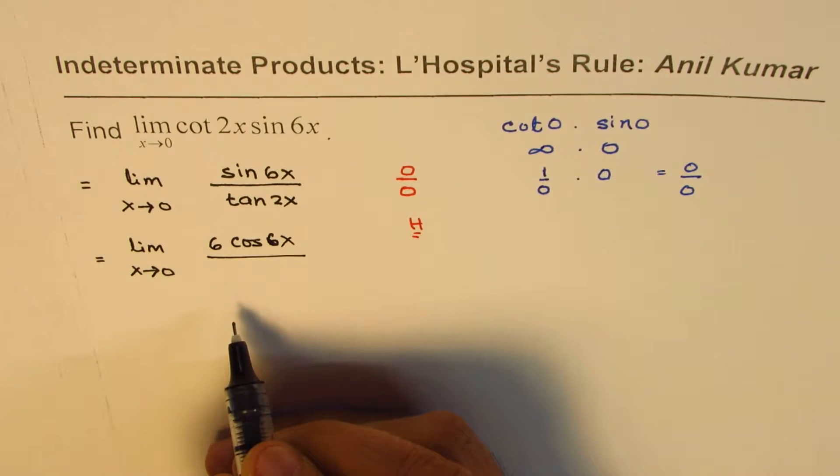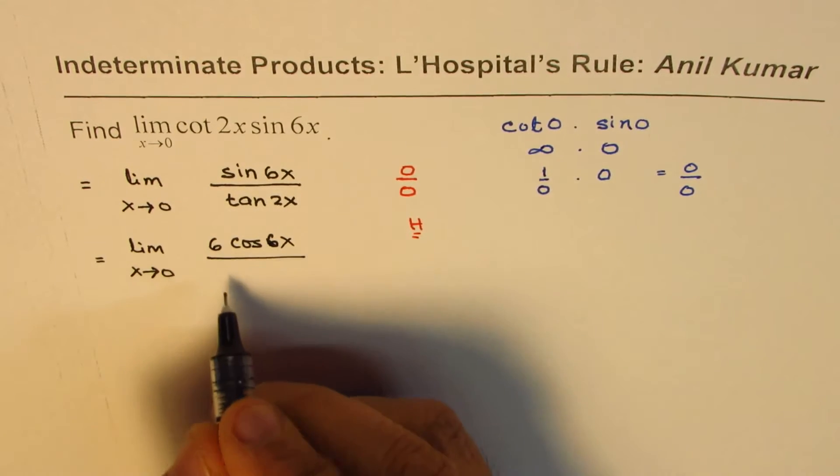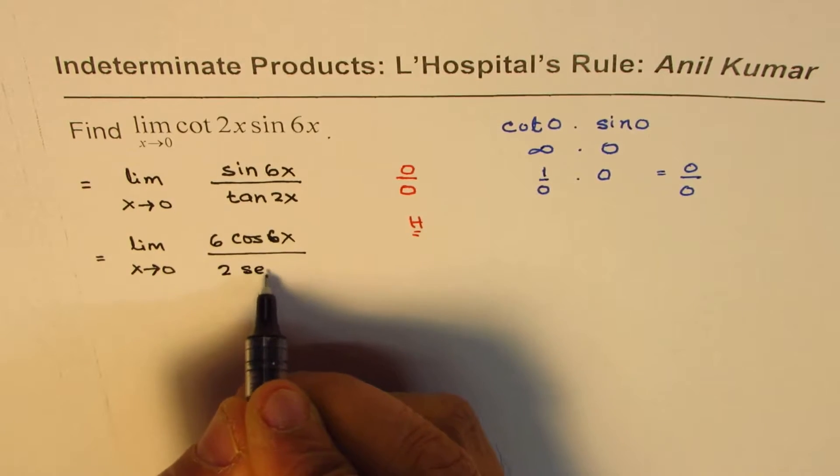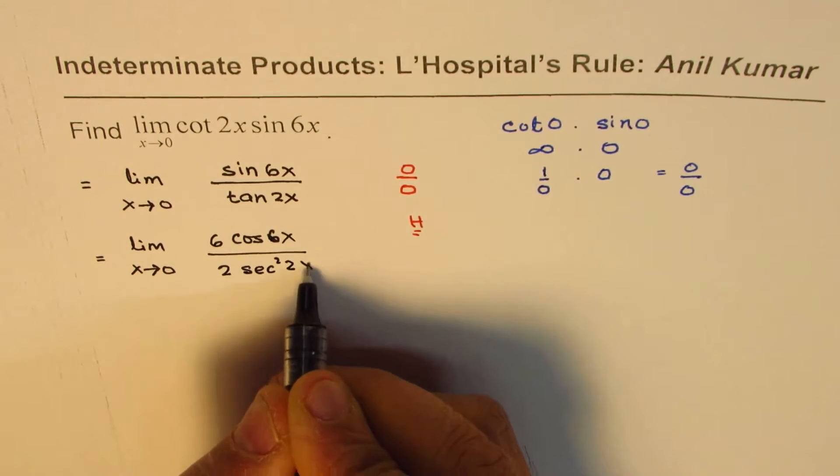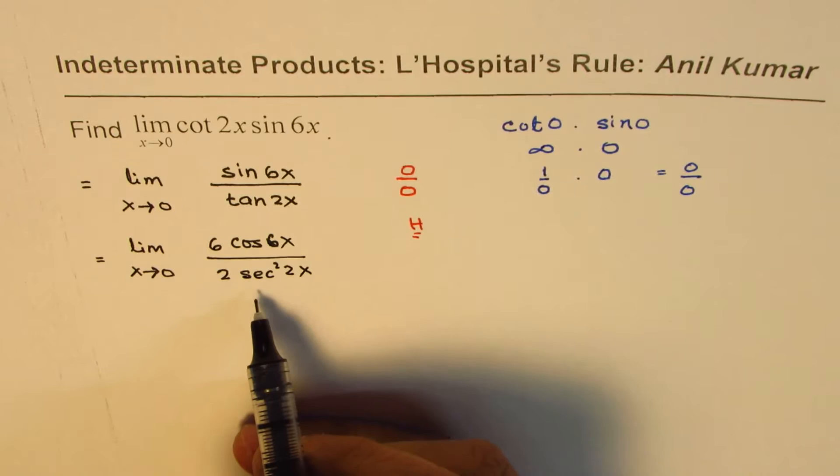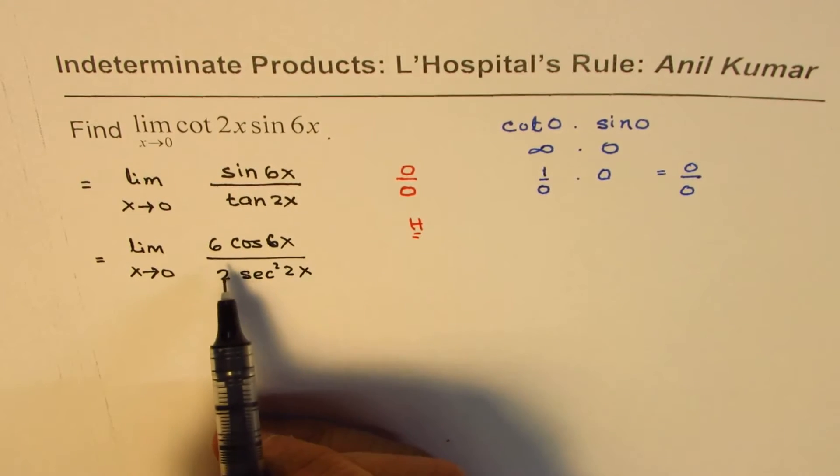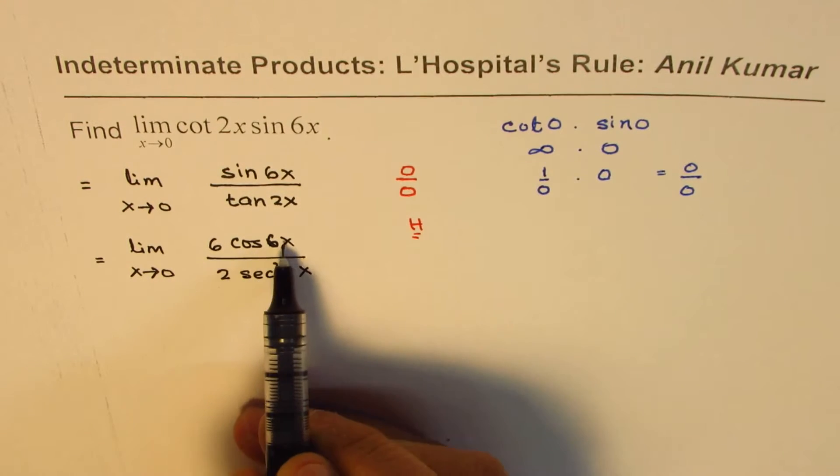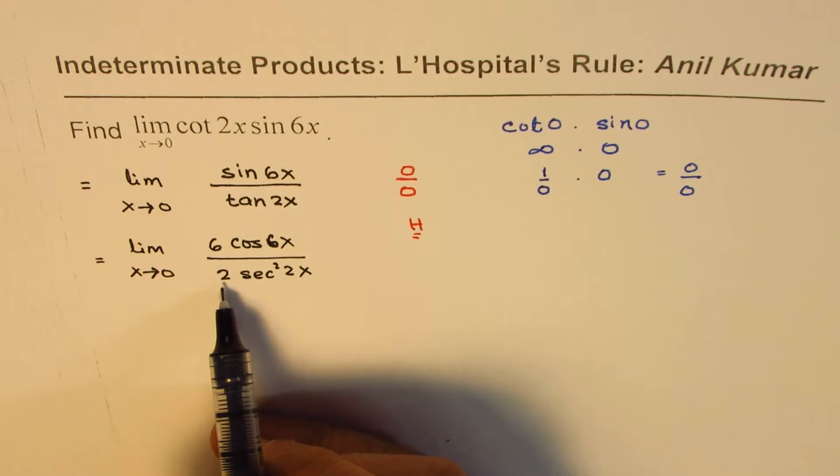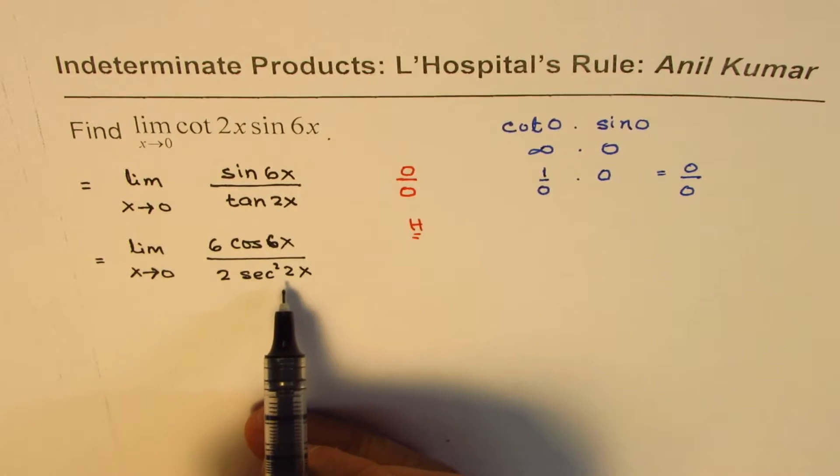And as far as tan 2x is concerned, it will be 2 times secant square 2x. So we get the ratio 6 cos 6x over 2 secant square 2x.